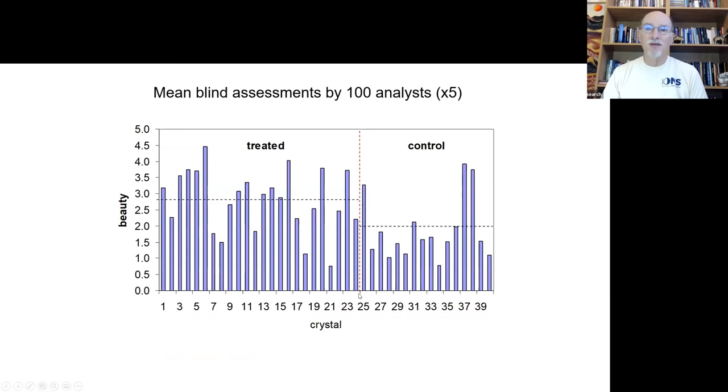So the bottom line was this. We got all of the water that was treated and all the crystals, all of the controls. And in each case, we asked 100 judges to look at each crystal without knowing the condition and to assess how beautiful it was. So this is more or less trying to replicate what Dr. Emoto claimed about the beauty of the crystal. And there is a significant difference between the treated and the control. The treated were slightly more beautiful.